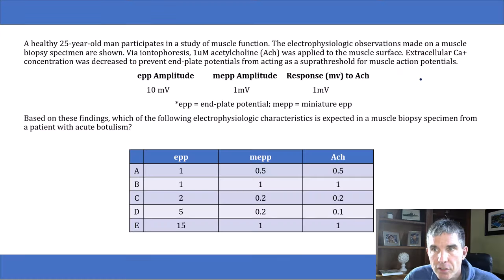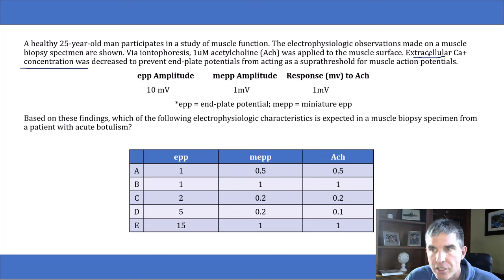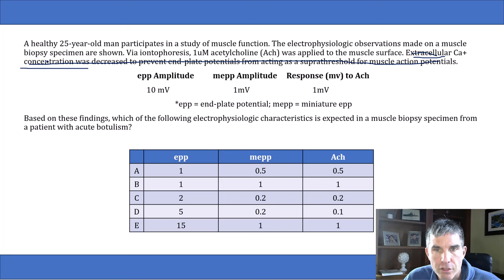Let's go back to the question. First of all, this really confusing sentence about extracellular calcium concentration is totally irrelevant to answering this question. They're just telling you that the researchers reduced the extracellular calcium concentration so the muscle cells they were studying couldn't contract, but it has no bearing on the correct answer.